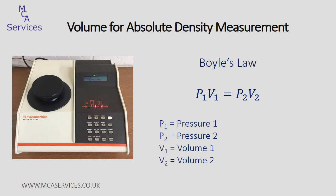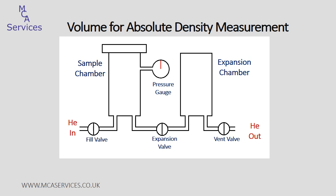At MCA Services we use a Micromeritics AccuPyc gas pycnometer to measure absolute density. This applies Boyle's law to the measurement of the sample displacement volume and then applies this to the calculation of sample density. The gas we prefer to use wherever possible is helium.